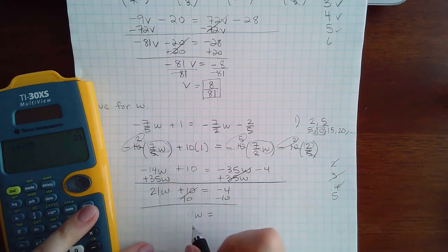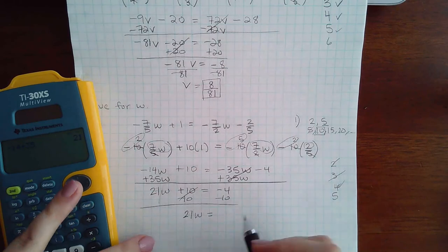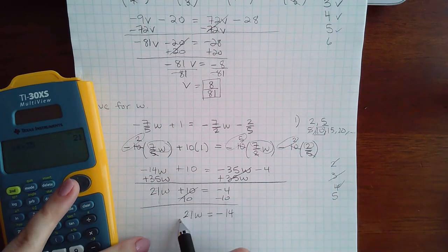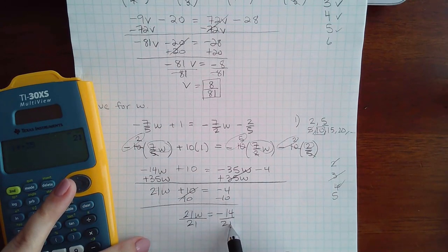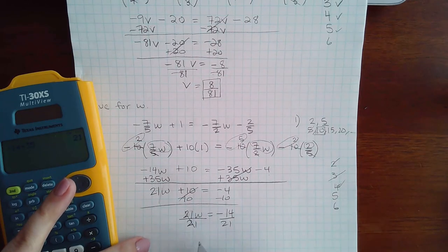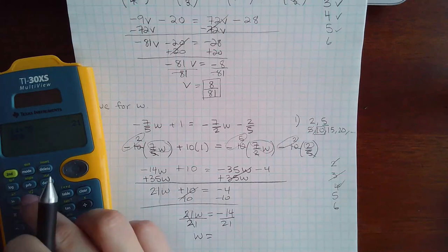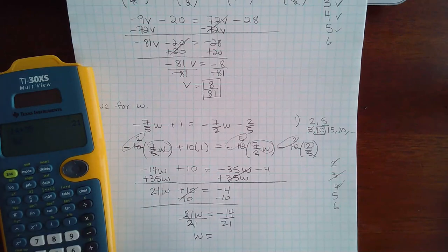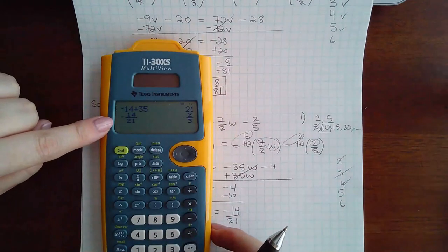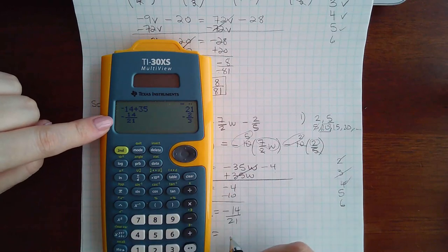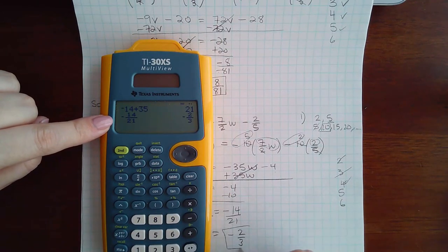Since we do have our trusty calculators to use, this would be negative 14. Divide both sides by the coefficient to step 6. And if you type that in the calculator it will reduce it to two-thirds. So notice when I type that in the calculator it does reduce it to negative two-thirds and that is the answer.